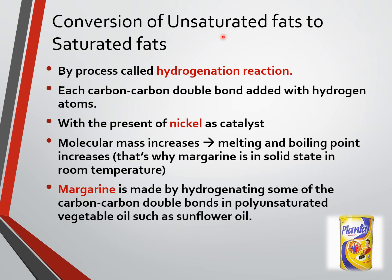Conversion of unsaturated fats to saturated fats: the double bonds present in unsaturated fats can be removed by a process called hydrogenation. Each carbon-carbon double bond is added with hydrogen atoms, with nickel as the catalyst. The molecular mass increases because hydrogen is added, and the melting and boiling points also increase. That's why margarine is in solid state at room temperature.